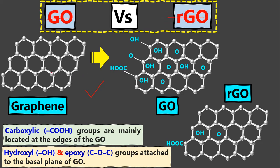Let's suppose we have graphene here. Graphene has a structure where carbon atoms are arranged in a hexagon shape, and it extends in a two-dimensional shape. This is what we call graphene.